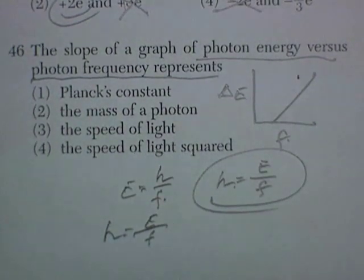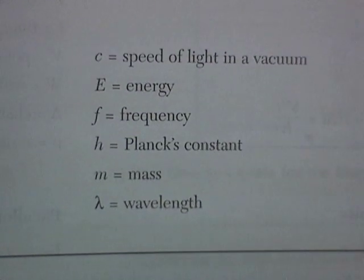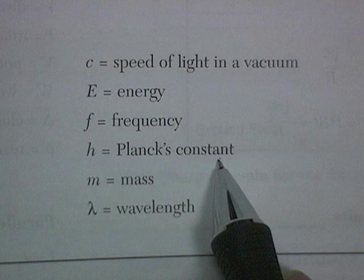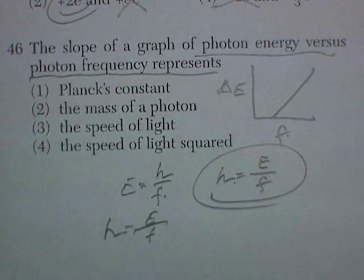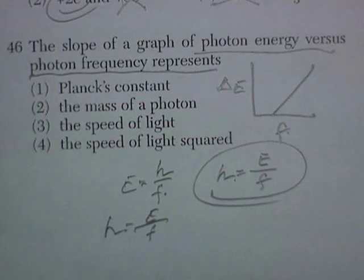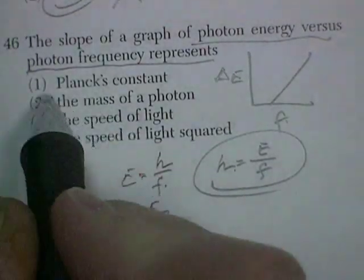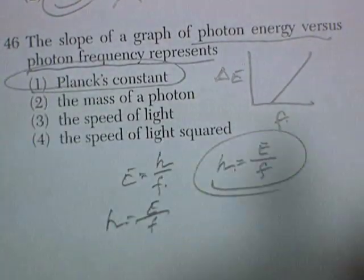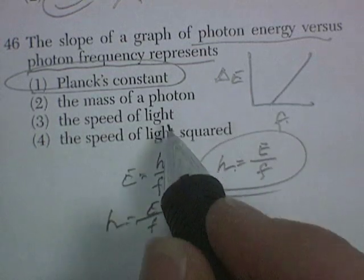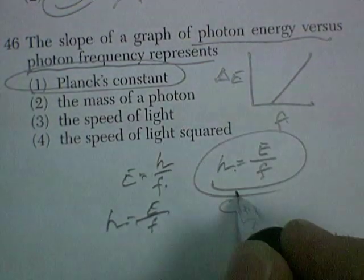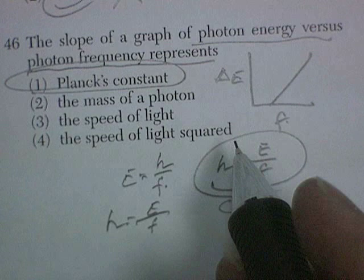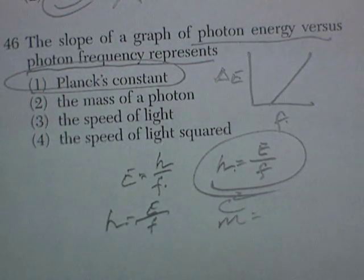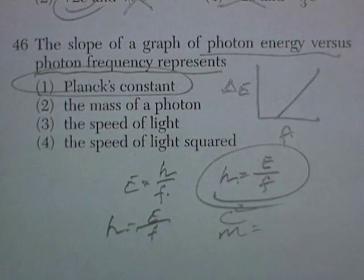What is h again? Planck's constant. I knew that. And let's go see. Yep, there it is. Planck's constant is there. And let's pick that answer. We're happy with it. The mass of a photon. Speed of light would be c. Speed of light squared. Mass of a photon would be m. So it's got to be Planck's constant. Enjoy.